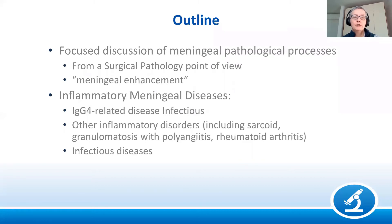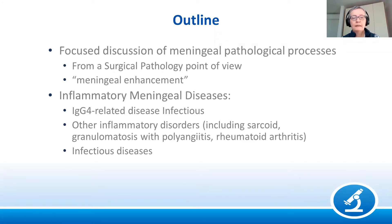The inflammatory meningeal diseases include a lot of conditions. We'll focus on IgG4-related disease, which has received a lot of attention lately, but also on other inflammatory disorders including sarcoid, granulomatosis with polyangiitis, and rheumatoid arthritis. And of course, we'll talk about infectious diseases of the meninges.